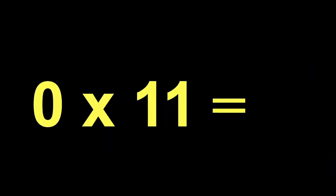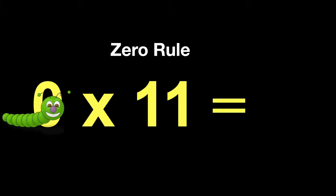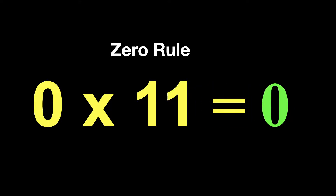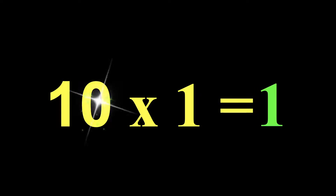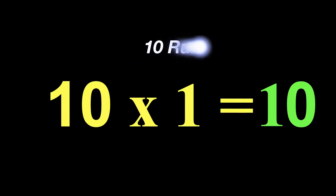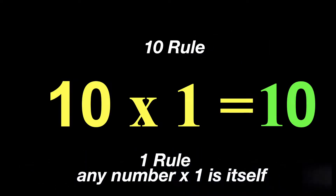0 times 11 — that's easy, just the 0 rule. Any number times 0 equals 0. Thanks Wally, and that would be 0. 10 times 1 — are we done? No, got to add your 0. So 10 times 1 is 10. That is the 10 rule. I also could use the 1 rule, where any number times 1 is itself, and either one you like is fine.